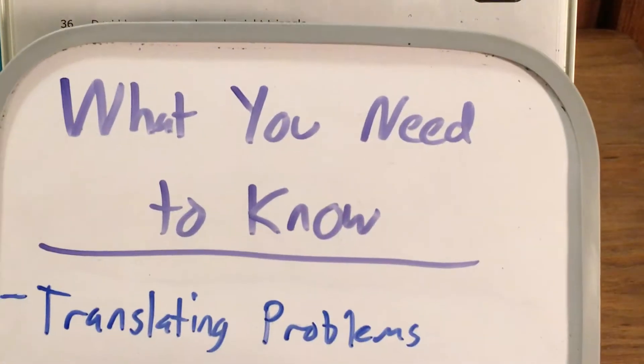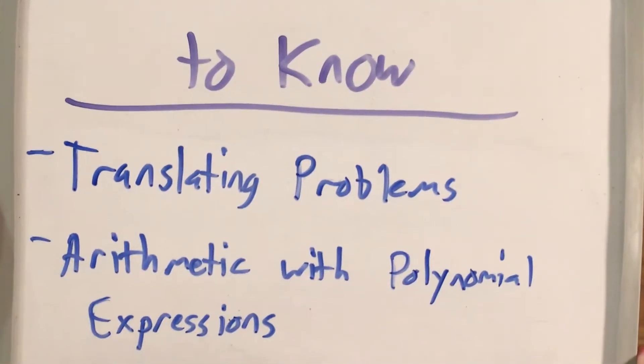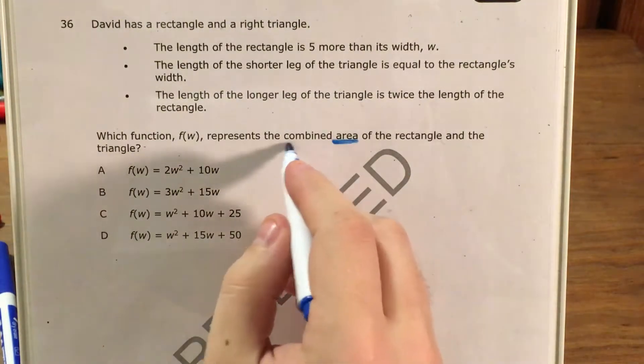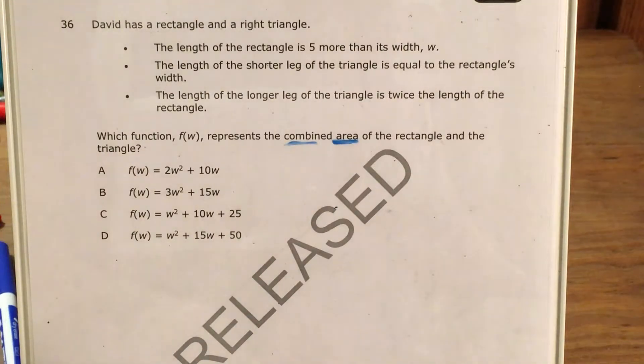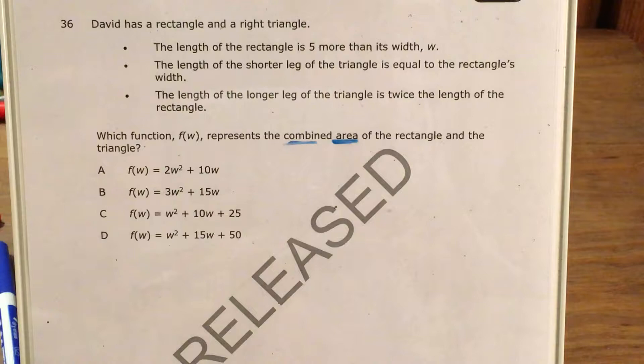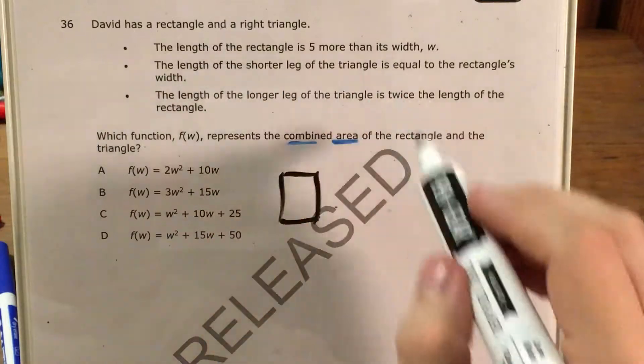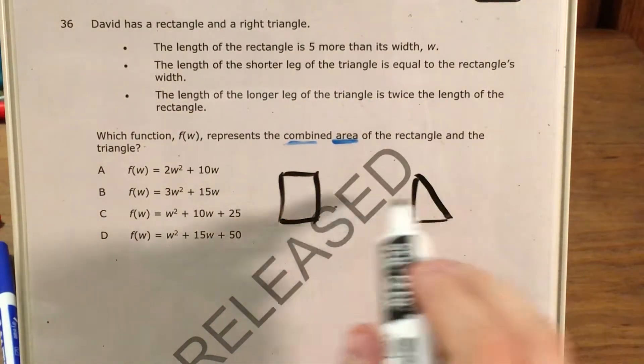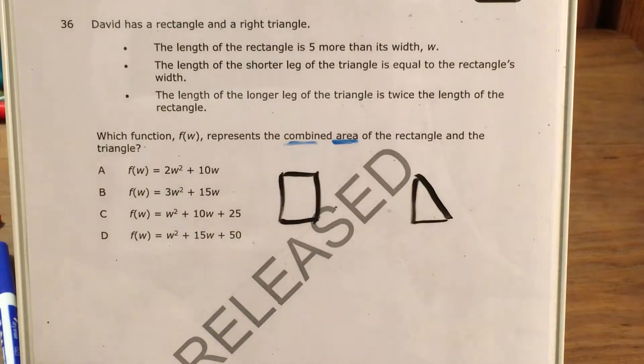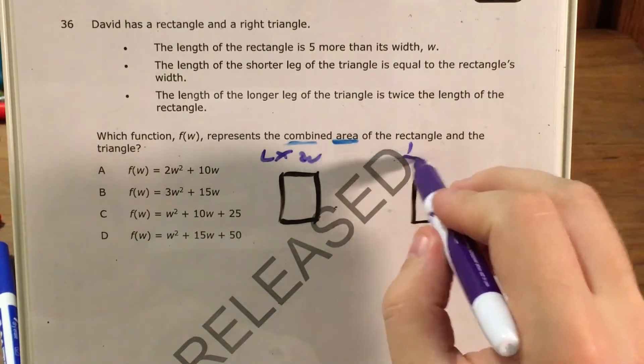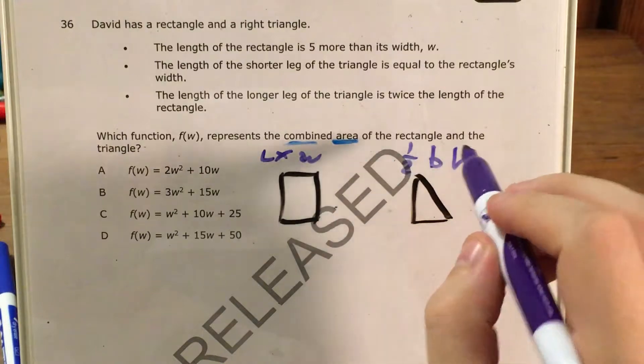This question is going to test our ability to translate a word problem and also do arithmetic with polynomial expressions, which will eventually give us an answer and a function that will match up with this. So let's start by looking at these two words: combined area. What that tells me is that whatever my rectangle is, and then whatever my right triangle is, I'm going to have to find each of their areas and add them together. The area of a rectangle is length times width. Area of a triangle is one-half times base times height.